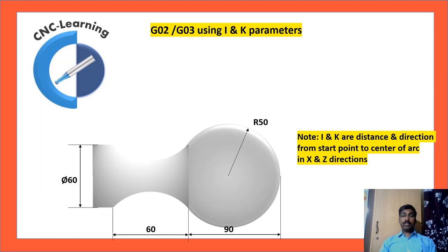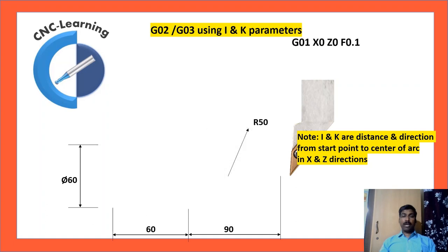This definition is very, very important because instead of start point, if you calculate from center to start point, the direction is going to change and the center definition also will change. So it is very important to remember this definition. You need to always see the I and K from start point of the arc to center of the arc.